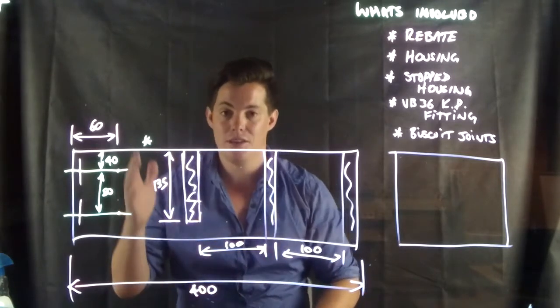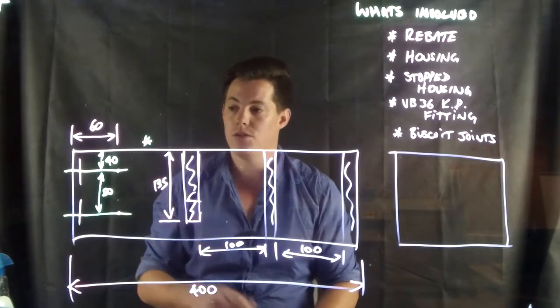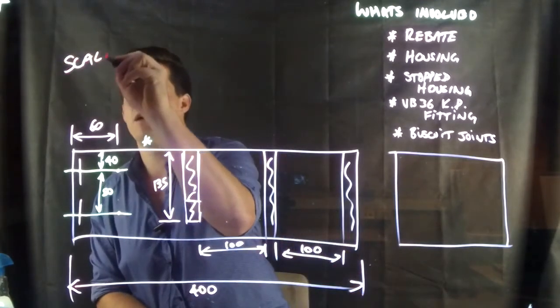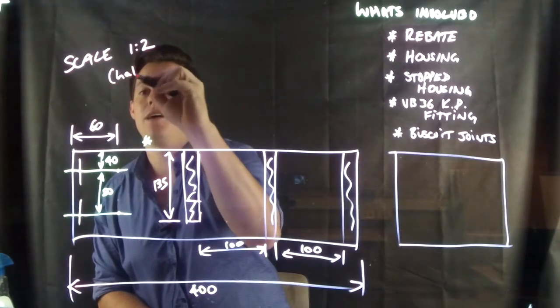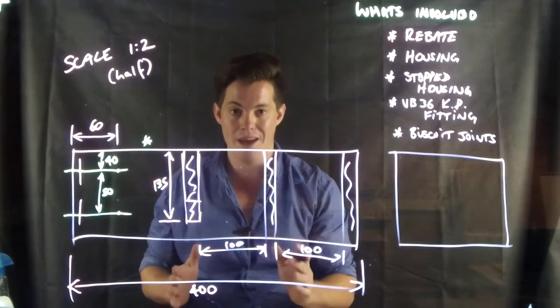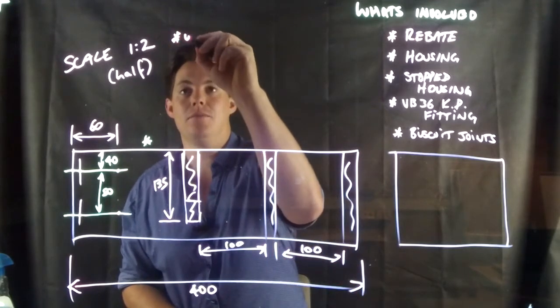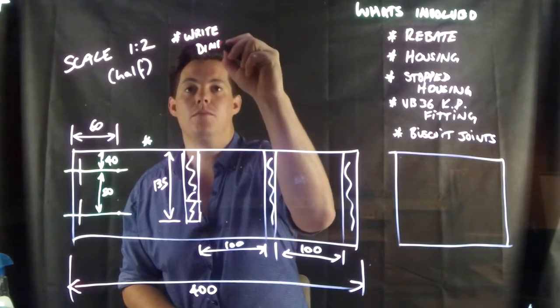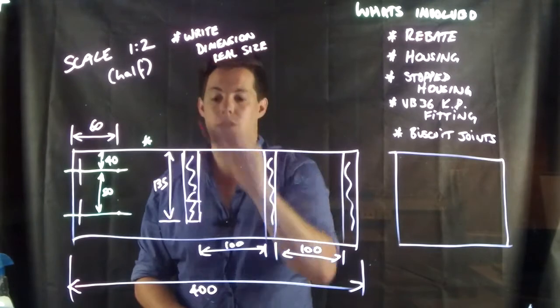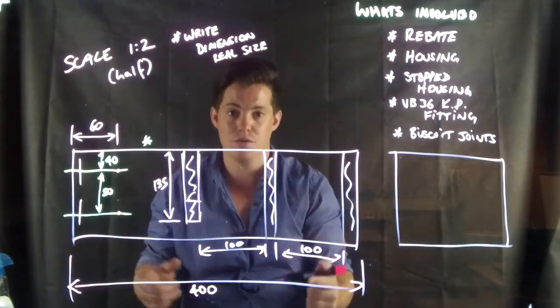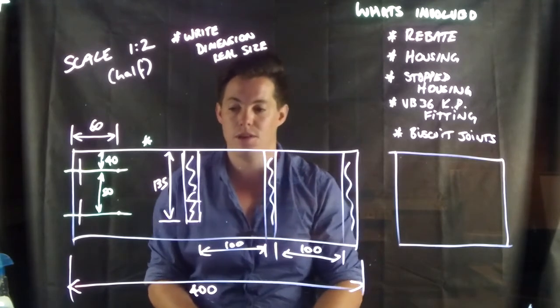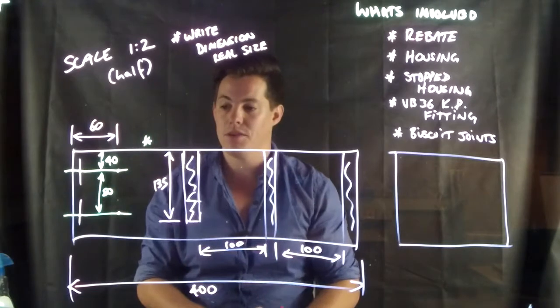So what I want you to do now is I want you to pause and I want you to draw this up to scale on a bit of paper. So I want the scale to be one is to two, just so it fits on your page, and remember that's half, that's half the life size. Now I want you to draw it up so it's 400 mils in length, that would be 200 mil on your page, however you still write in your dimensions as the real size. So even though you will do this at half the size on your page, you still write in 400, you still write in 100 and 100 as your gaps, because that's the actual size that you're going to be using. So you scale it to half but you write your proper size dimensions down.